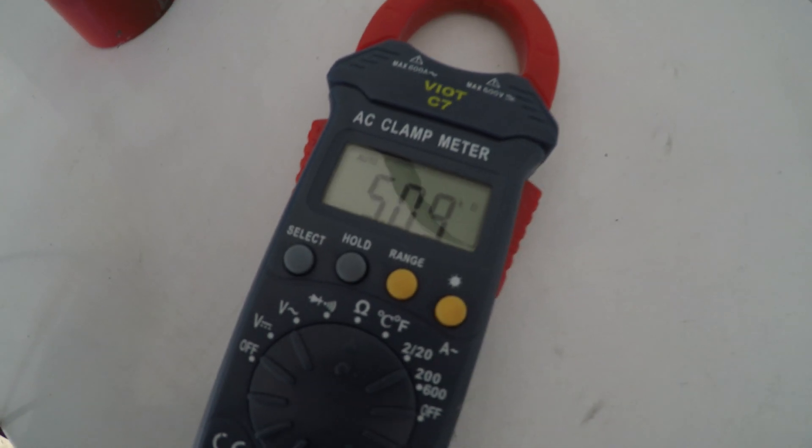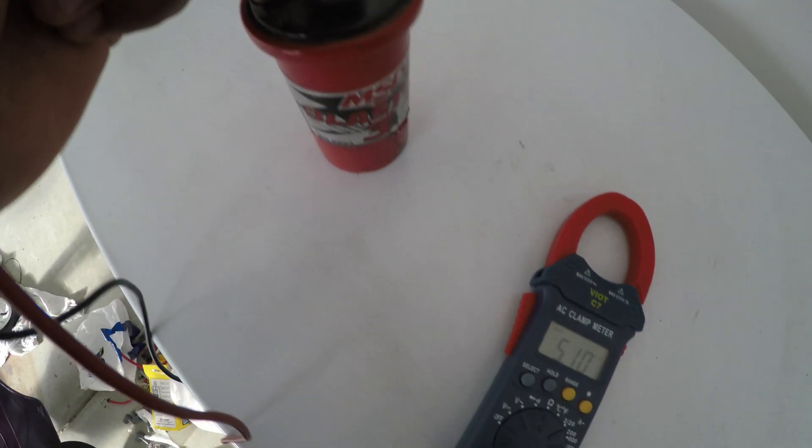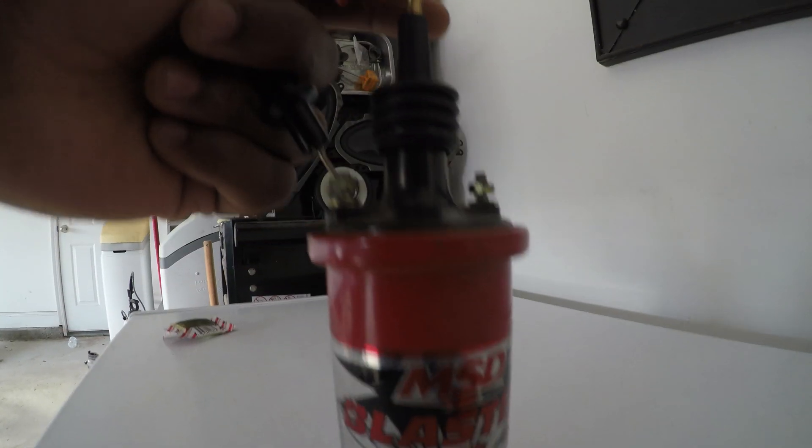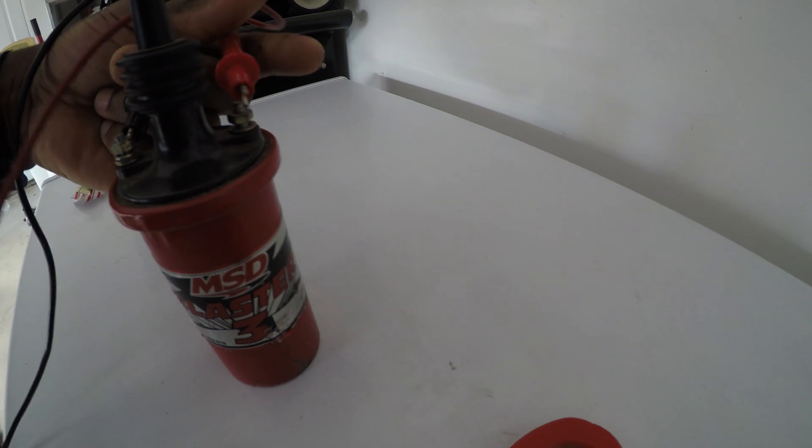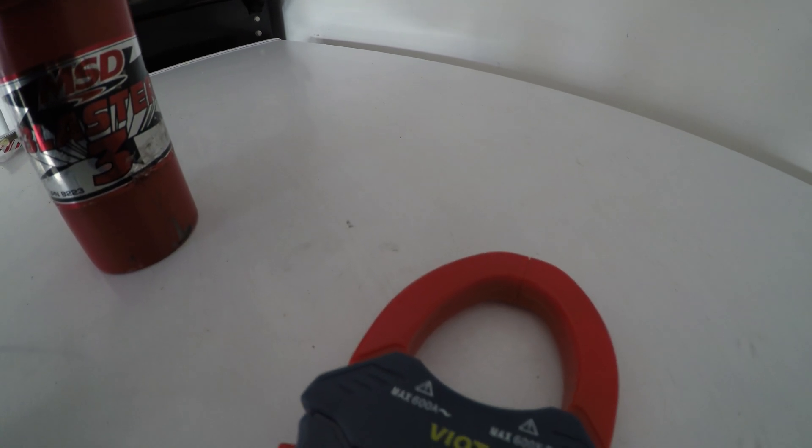Yeah, I went ahead and replaced this MSD Blaster 3 coil. As you can see, it's putting out as it should be on the secondary side. It's just real flaky when it comes to the primary. Like I say, you measure the primary from both of the outside connections, which is located on the coil.